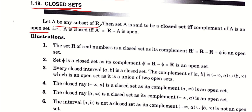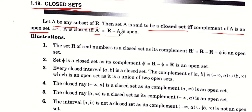Definition: Let A be any subset of R. Then A is said to be a closed set if and only if the complement of A is an open set. Complement को हम कैसे define करते हैं? R में से A के elements को minus करके जो elements बचेंगे। तो कोई set closed कब कहलाता है? जब उसका complement open हो। और open set की definition आप study कर चुके हैं।